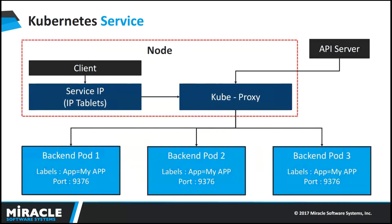If we have multiple pods running, how do we ensure there is a single endpoint to access them? A Kubernetes service takes care of that. It provides a unified way to route traffic to a cluster and eventually to a list of pods. The same labels are used to identify the pods. By using a service, pods can be brought up and down without affecting anything — it is seamless to the client.